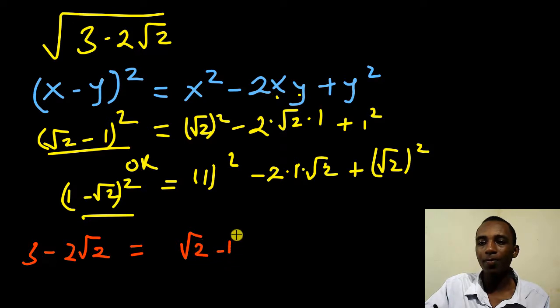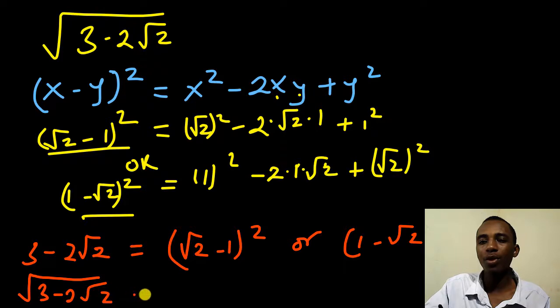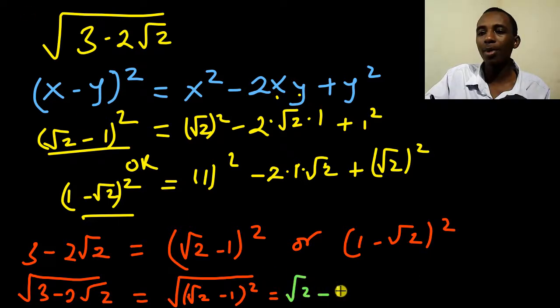Or it is 1 minus square root of 2 squared. So that means if I put this under a square root of 3 minus 2 root 2, the answer I'll get will either be the square root of root 2 minus 1 squared, which of course is root 2 minus 1.